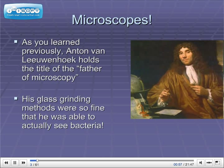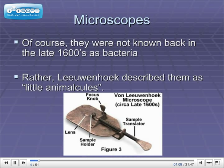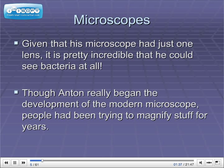As you've learned previously, Anton van Leeuwenhoek holds the title of Father of Microscopy. His glass grinding methods were so fine that he was able to actually see bacteria. Of course, they were not known back in the late 1600s as bacteria. Rather, Leeuwenhoek described them as little animalcules. You can see in this picture Leeuwenhoek's microscope, which is pretty crude, but he was so good at grinding glass and making lenses that he was able to get a really high magnification. Given that his microscope had just one lens, it's pretty incredible that he could see bacteria at all.